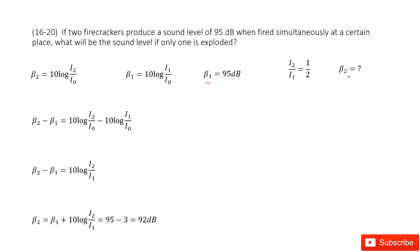The question asks for beta 2. Since we know the ratio of intensity, we can find the sound level. We know the function relating intensity and sound level for beta 1 and beta 2. So we can write beta 2 minus beta 1 equal to 10 log of I₂ over I₁. When we simplify, the difference between beta 1 and beta 2 is 10 log(I₂/I₁), and I₂ and I₁ are given.